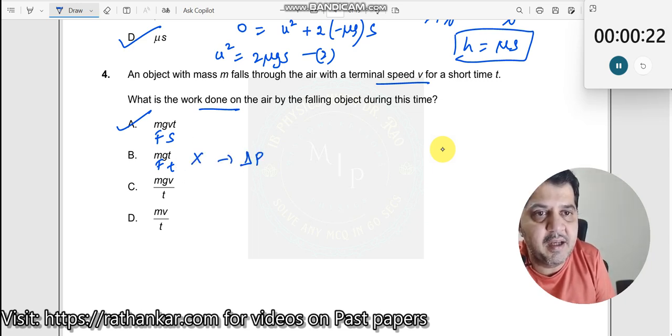This is your delta p, impulse. m g into v by t, what is m g, force, what is v by t, acceleration, so definitely this is also incorrect. We do not have any quantity like this.